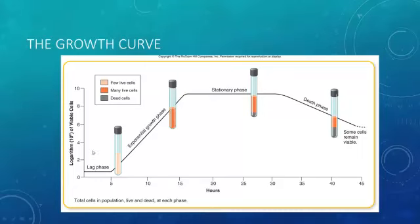First we have the lag phase. In this phase, the culture is not dividing at maximum speed. This is partly due to low cell counts, but it is also due to the adjustment period by cells as they get used to their new home.